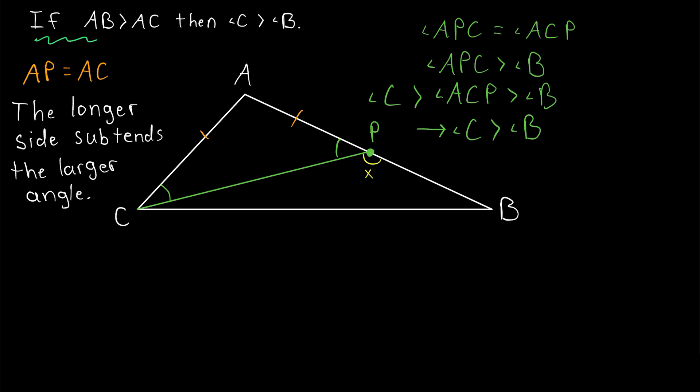As you may suspect, the converse is also true. If all we knew was that angle C was greater than angle B, then we'd be able to prove that AB is greater than AC. So it's also true that the larger angle is subtended by the longer side. So give that a shot as an exercise. Flip this statement around to get the converse and try writing a proof. We'll go over it next time.